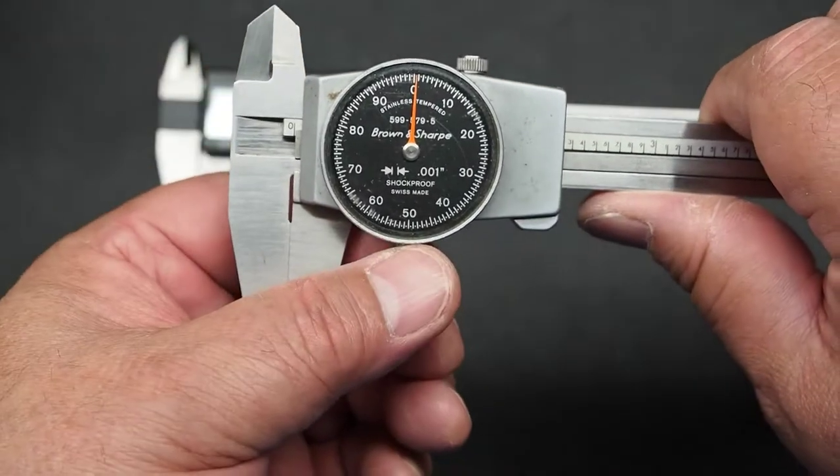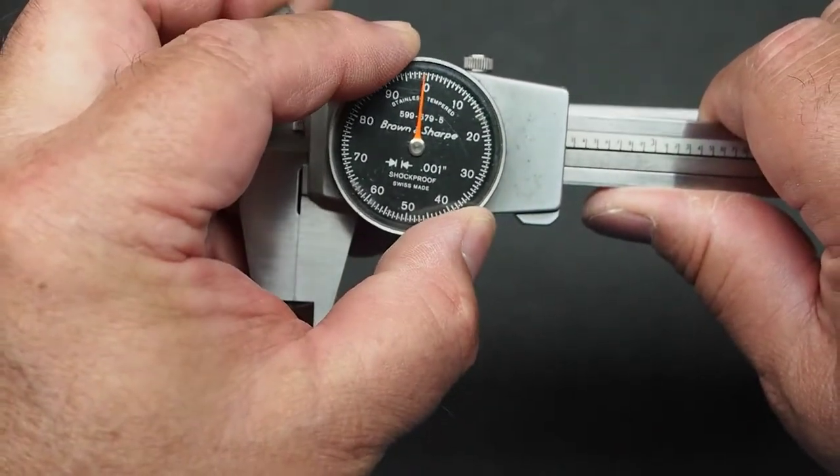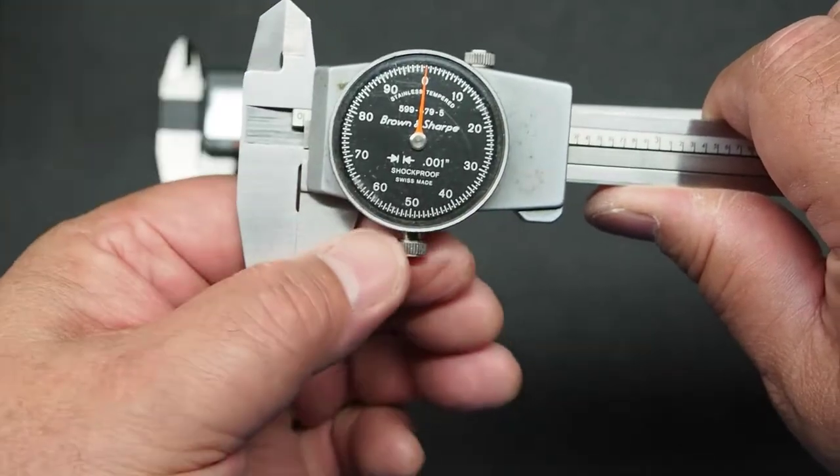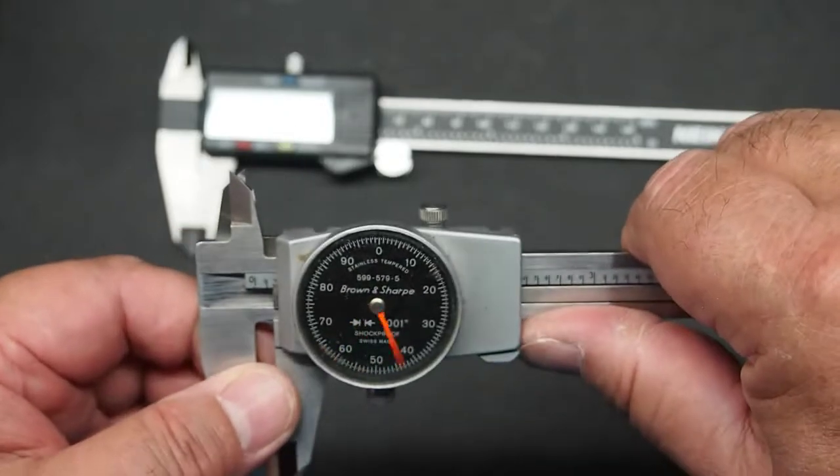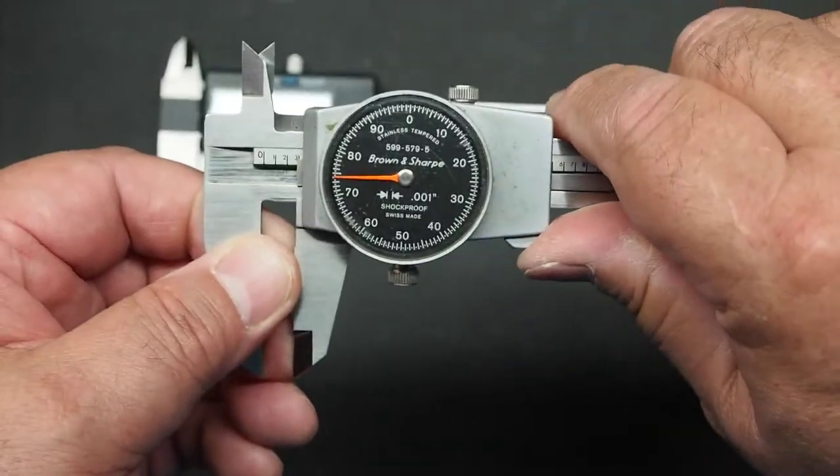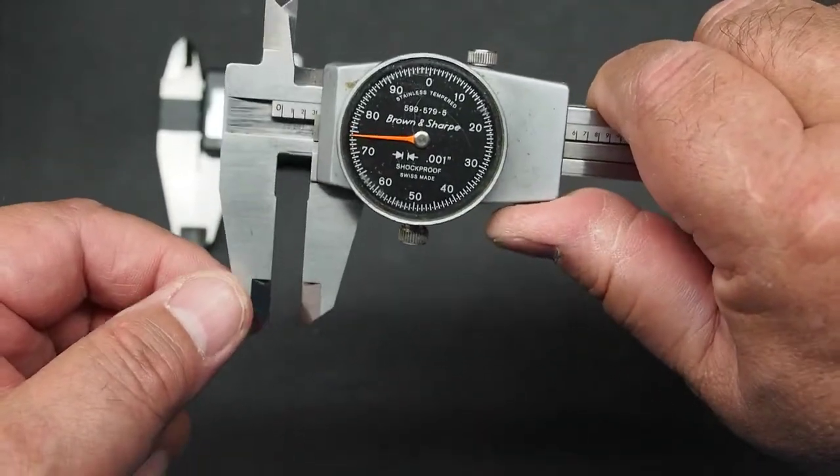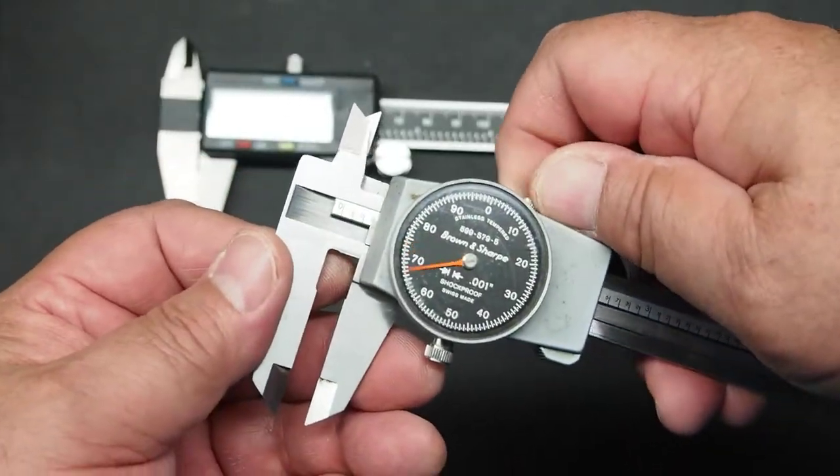If you have dial calipers there's actually a locking screw you can loosen here and you can turn the dial to zero the unit, as opposed to a zeroing button. And they all have a locking screw so once you measure something you can lock the calipers at that place and it'll hold that measurement if you want to use that measurement to compare against other things.